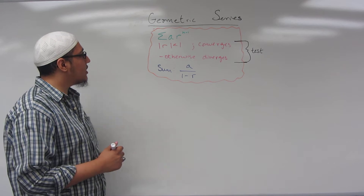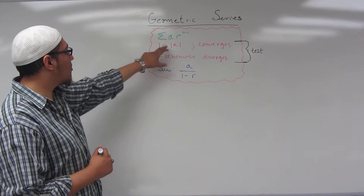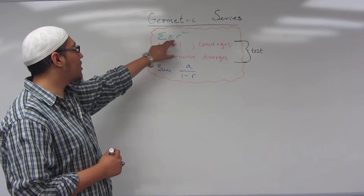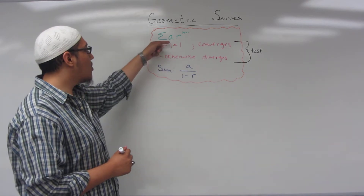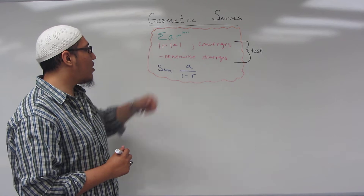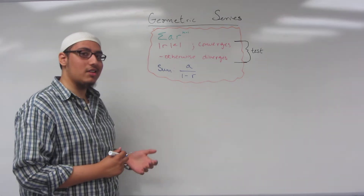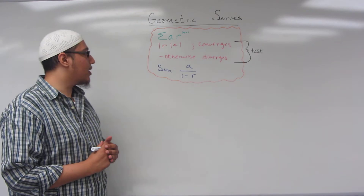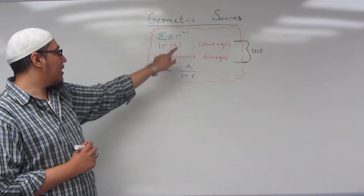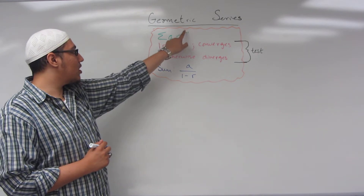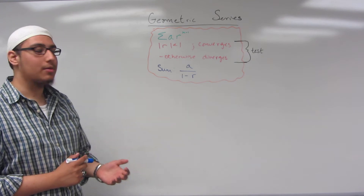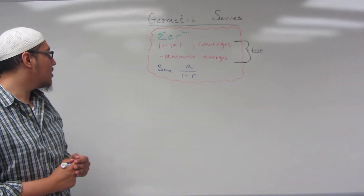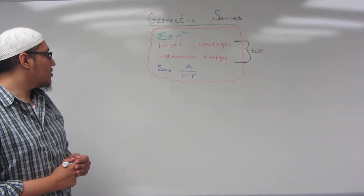The geometric series is written in the format of A times R to the N minus 1, where A and R are both constant terms, and R is raised to some power.